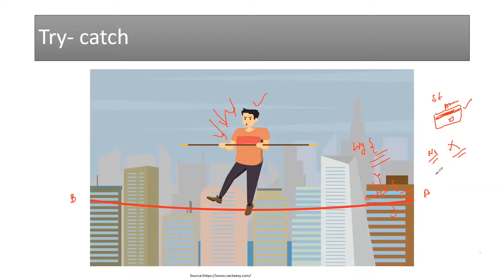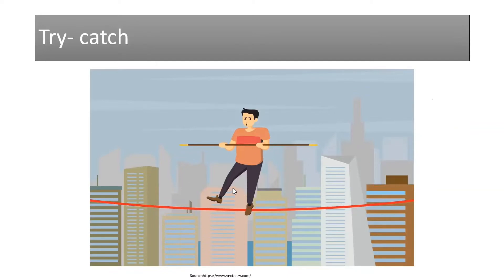That is where your try-catch block comes into picture — just like the task of walking from building A to building B on a wire with a mechanism that catches if something goes wrong. That is what this concept is all about. Without any delay, let's get started understanding the syntax with a simple example.